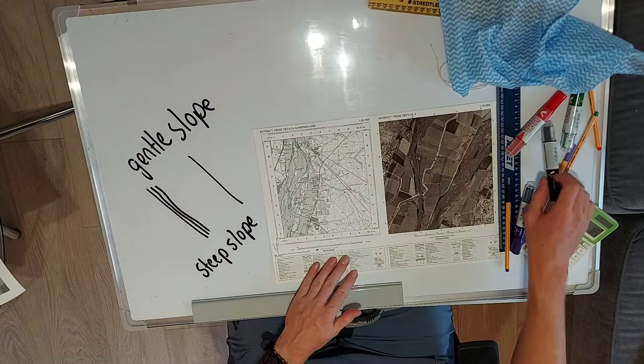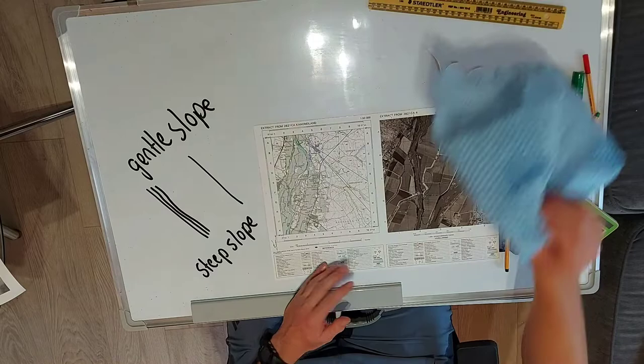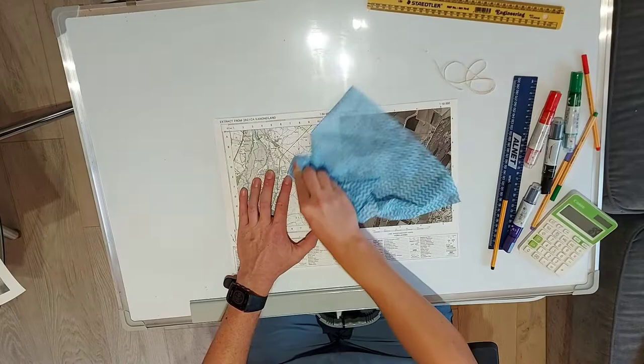We actually went through various types of slopes — not only gentle slopes and steep slopes, but concave and convex slopes as well. I can show you, but I'm not going to show you on this specific map. A concave slope would be drawn like this.